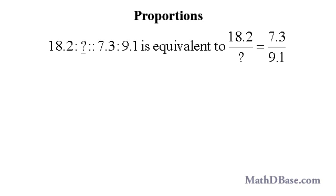If we know that the ratio of 18.2 to some number is proportional to the ratio of 7.3 to 9.1, we are setting up the equality of ratios 18.2 over some number equal to 7.3 over 9.1. Again, the product of the means is equal to the product of the extremes.